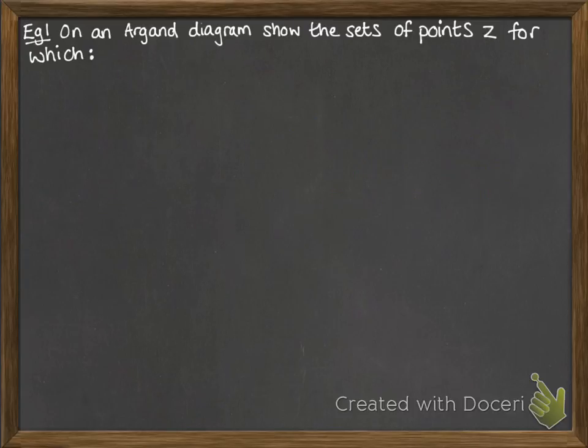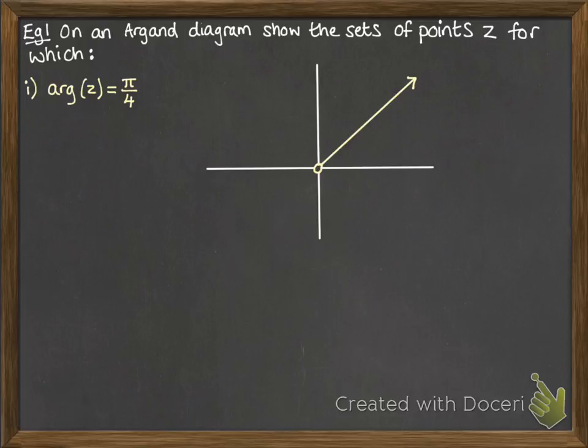Okay, let's have a look at some examples of how we can draw some sets of points, or loci. So we're going to draw for the following conditions. We want the set of points where the argument of z is equal to π/4. So here's your Argan diagram. We want the argument being π/4. Well, π/4 is 45 degrees, so it's this line here.